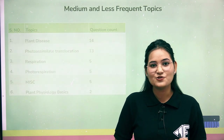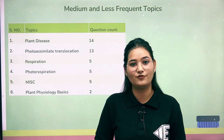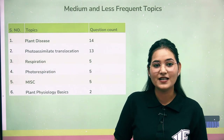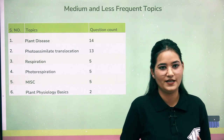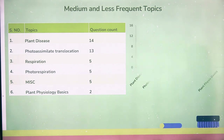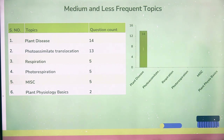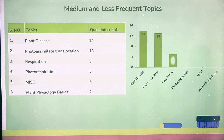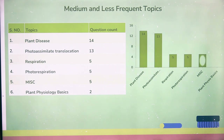The second category is medium and less frequent topics, which includes 6 topics: plant disease with 14 questions; plant assimilate translocation with 13 questions; respiration with 5 questions; photorespiration with 5 questions; miscellaneous concepts with 5 questions; and plant physiology basics with 12 questions.